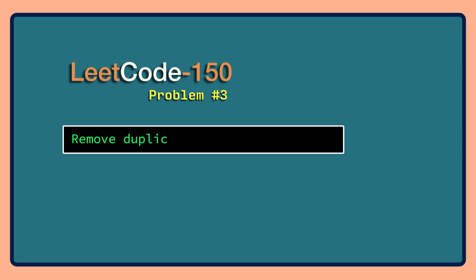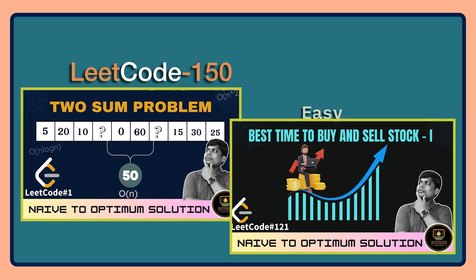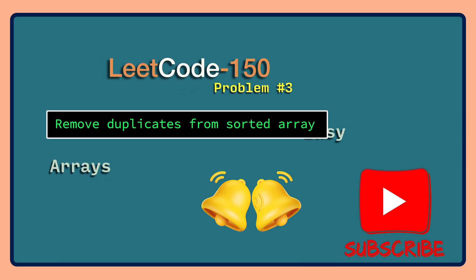Hi there, this is Thiru. Welcome back to the channel for the LeetCode 150 series. Today we are going to solve problem number 3 in our list, that is 'Remove Duplicates from Sorted Array', which is an easy problem from the arrays data structure. We have already made two videos on the first two problems — two-sum and best time to buy and sell stock. You can check the links in the info section or video description. Please don't forget to hit the bell icon to get more animated or visualized videos on LeetCode problems. Let's dive in without further delay.